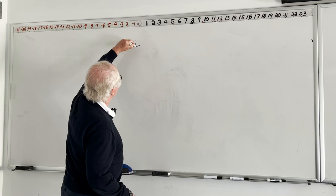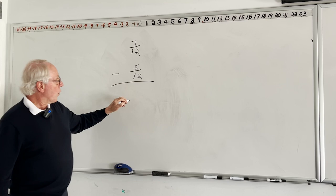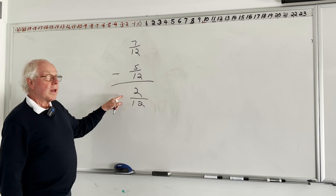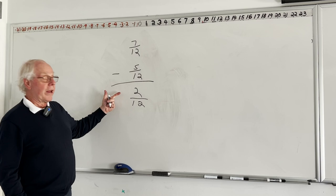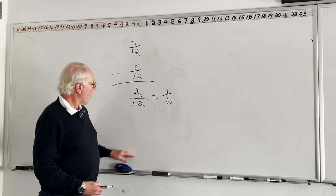The next one is seven-twelfths minus five-twelfths — a subtraction problem. We know the answer is going to be some number of twelfths. Seven take away five is two, so two-twelfths. We're all set except for one thing: this fraction can be reduced, because two goes into both the numerator and the denominator. Two goes into two once, two goes into twelve six times. So the answer they'd be looking for is one-sixth.